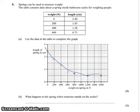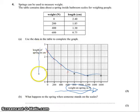What happens to the spring when someone stands on the scale? When someone stands on the scale, there's going to be an increase in the weight on the spring. Now we can see that if the weight increases, the length of the spring goes down. So we're going to say the spring is compressed.